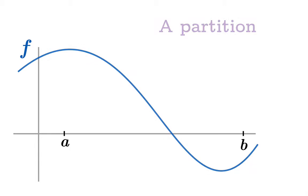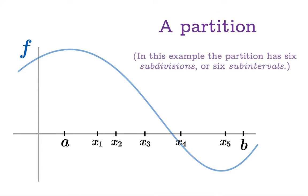The first ingredient we'll need is a so-called partition. Now all this means is that we'll chop the interval from a to b into smaller pieces. In this case, we've used six subdivisions or six subintervals. Now just to make the notation uniform, we could relabel the endpoints a and b. In this case, we'll call it x0 and x6.